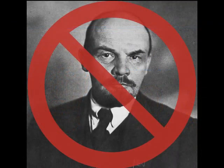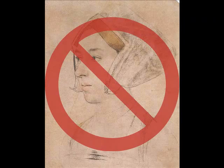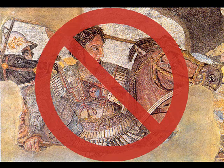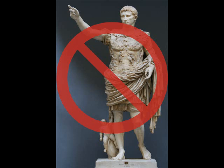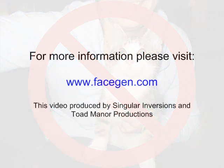On a final note, here are a few examples of what FaceGen is not intended for. Avoid black and white source photos because the 3D model created will only be black and white. This drawing by Hans Holbein the Younger won't work with PhotoFit because it is in three-quarter view. The same goes for this mosaic portrait of Alexander the Great and this marble statue of Emperor Augustus. If you try to load a three-quarter view image, you will likely get an error message stating incorrect placement of markers. Finally, no matter how cute your little fluffy is, pets will not work with PhotoFit. For more information, please visit www.facegen.com.